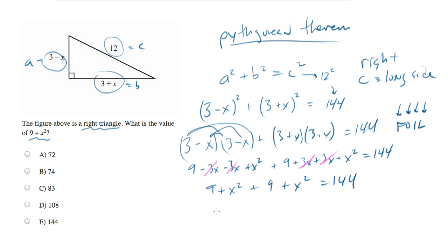And we're going to simplify this to 2 times 9 plus x squared equals 144. And then I'm going to divide both sides by 2. And you get 9 plus x squared equals 72.